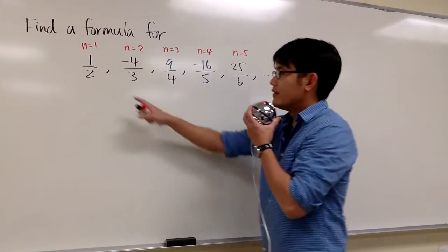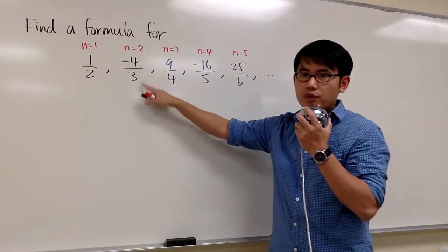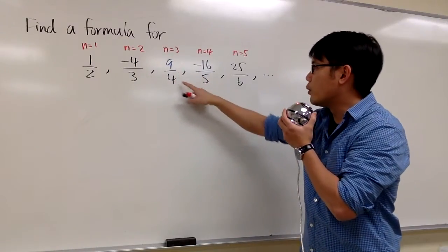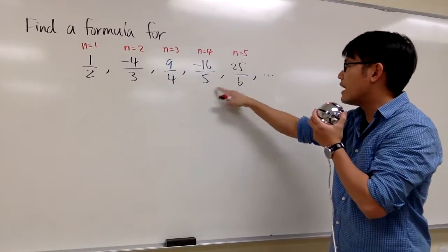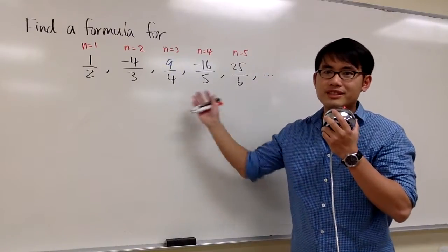We are given a sequence. The first number is 1/2, then negative 4/3, then 9/4, then negative 16/5, and 25/6. We are going to find a formula for this sequence.